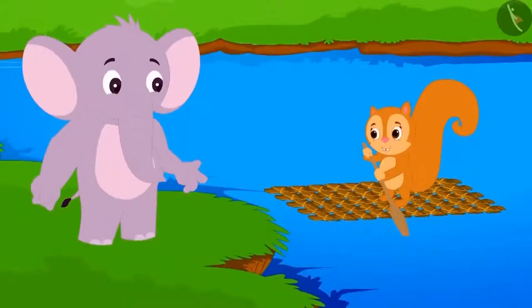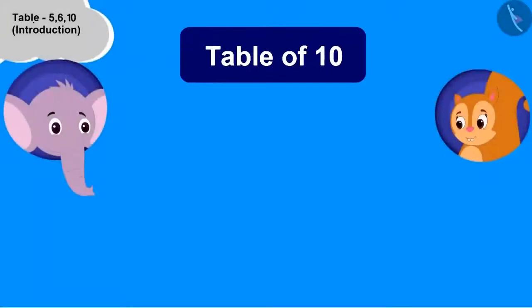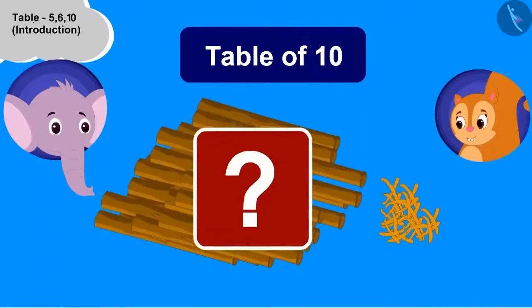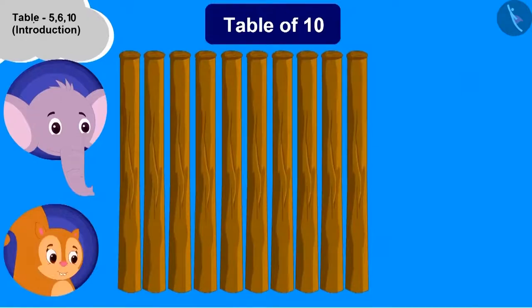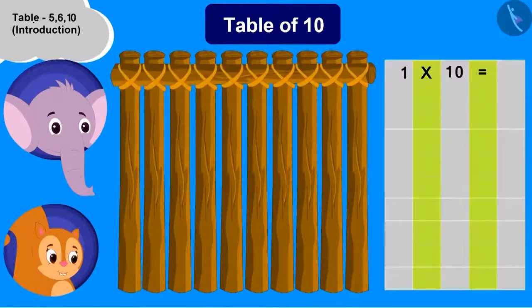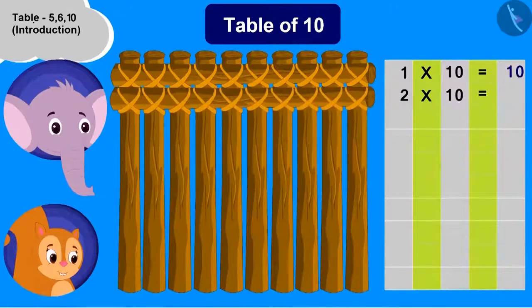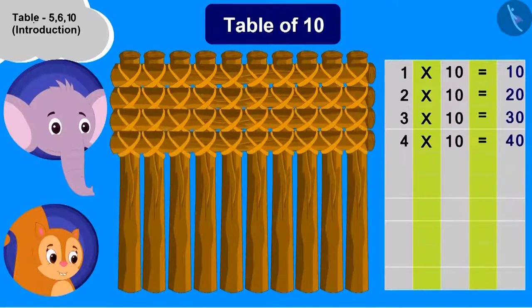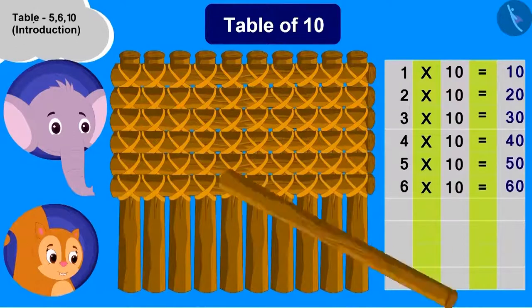Appu saw her sailing and asked Chanda to teach him to make a boat and learn the table of ten. To build the table of ten, Chanda uses ten sticks. Place one wood horizontally — one multiplied with ten is ten. Add another wood piece — two multiplied with ten is twenty. Chanda built the table of ten this way and Appu's boat was ready.